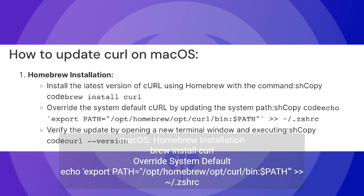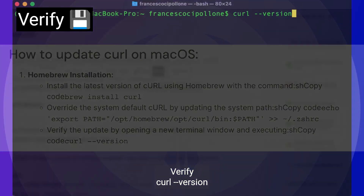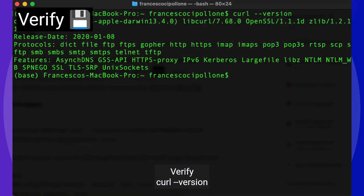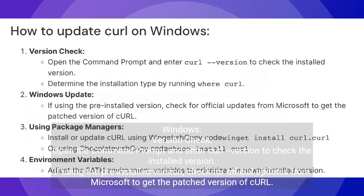For macOS, install curl via Homebrew: brew install curl. To override the system default, run: export PATH=/opt/homebrew/opt/curl/bin:$PATH, then append it to your ~/.zshrc. Verify the curl version after installation.